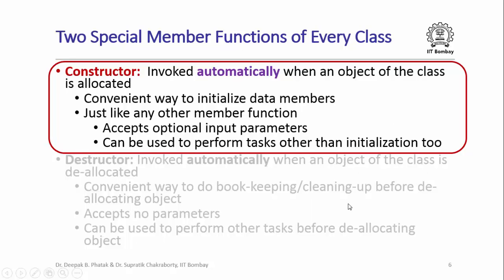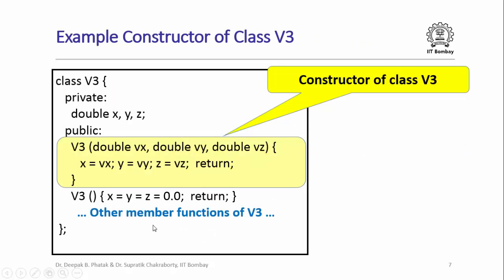In C++ there are two special member functions that every class and structure has. The first is called the constructor function. It is invoked automatically whenever an object of the class is allocated, and it is a very convenient way to initialize the data members of the class. It acts just like any other member function with some minor differences; it accepts optional input parameters and can perform computational tasks beyond initialization. Here is an example: the constructor of class V3 is placed in the public block, takes three double value parameters, and assigns them to the private data members x, y, and z.